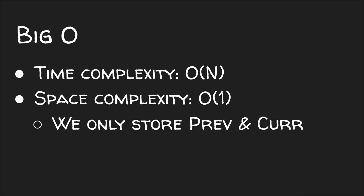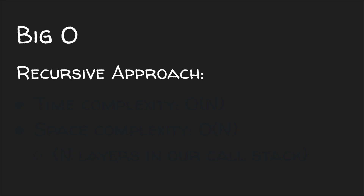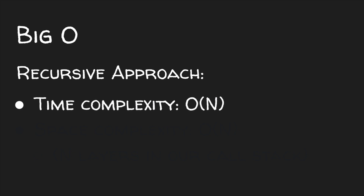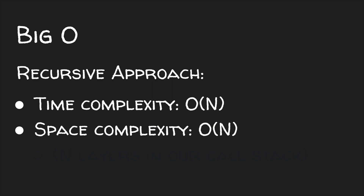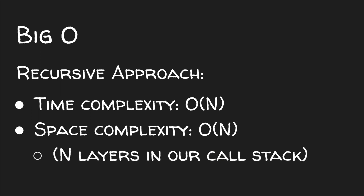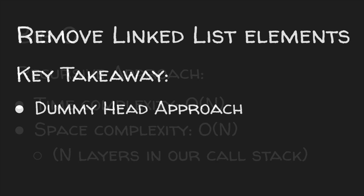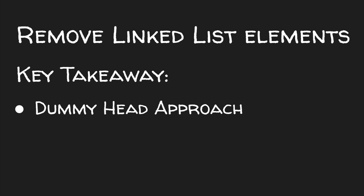We said we could also take a recursive approach. A recursive approach wouldn't do better in terms of time complexity since we still have to check each node, but in terms of space complexity it's worse — a recursive approach would take linear space since we'd have n layers in our recursive call stack, one for each node in our linked list. And that's it for today's video. Remember, the key takeaway for Remove Linked List Elements is getting practice with the dummy head approach, which we usually use whenever we take an iterative approach to solving linked list problems. Hopefully this video was helpful — thanks for listening!